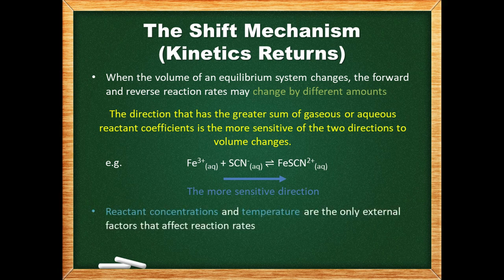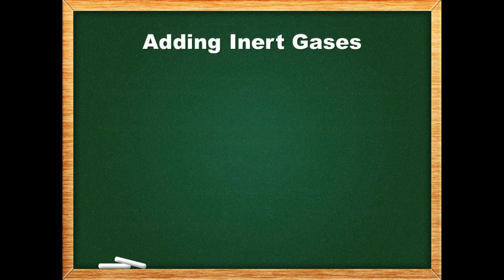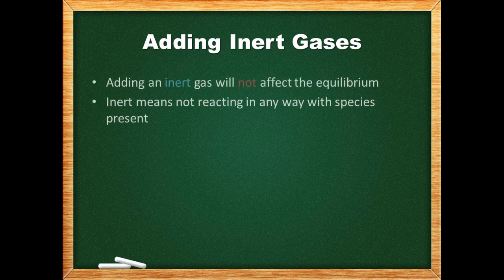Reactant concentrations and temperature are the only external factors that affect reaction rates. A pressure change only stresses an equilibrium if the pressure change reflects a change in the reactant and product concentrations. We can change the pressure without changing the concentrations — for example, by adding an inert gas to the system. Inert means not reacting in any way with species present. This pressure change does not affect the equilibrium.